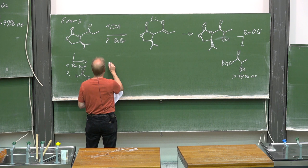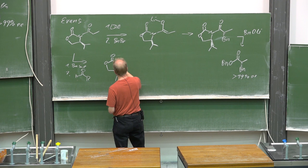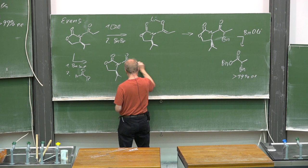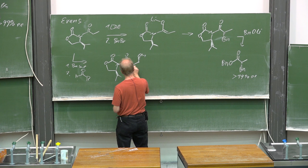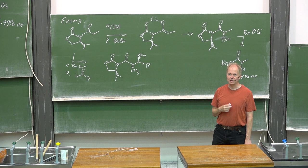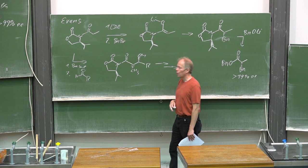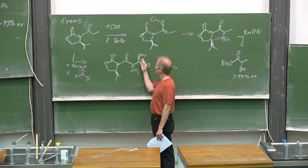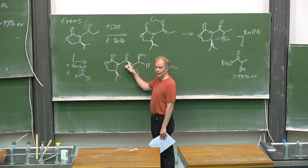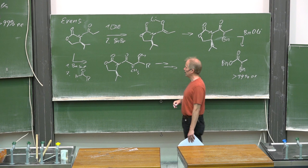In that case, you will form two stereogenic centers highly diastereoselectively in one step. And then you can go on with your chemistry. For instance, first protecting that with a silyl group, then reducing the amide to the stage of an aldehyde, and then doing the reaction again and forming two more stereogenic centers. Very versatile.